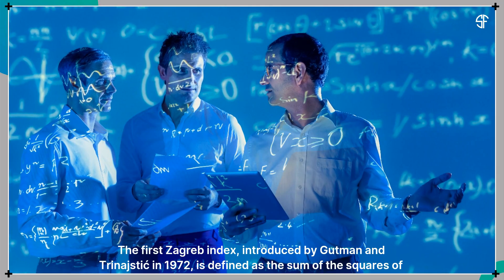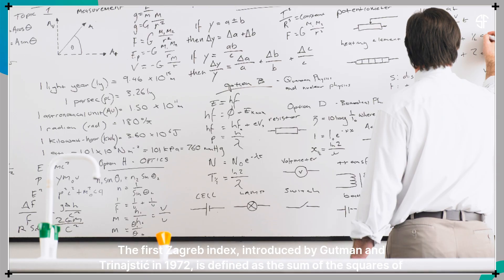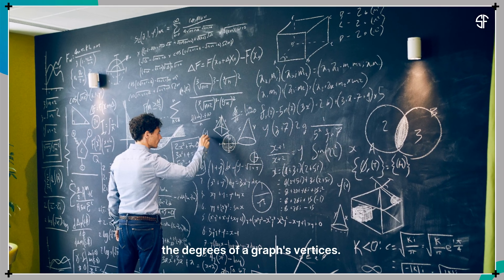The first Zagreb Index, introduced by Gutmann and Trinistich in 1972, is defined as the sum of the squares of the degrees of a graph's vertices.